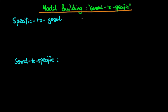The idea here is that we start off with a relatively simple model of the economic situation. So we have that wage is equal to a constant alpha plus some error term epsilon. The error term epsilon captures all of those other variables which affect wage and cause it to differ from its mean.